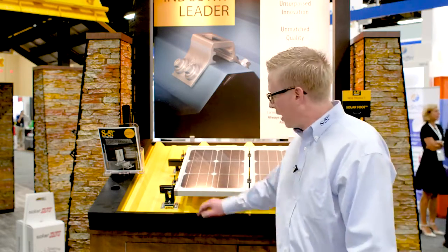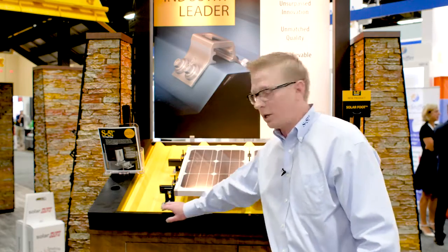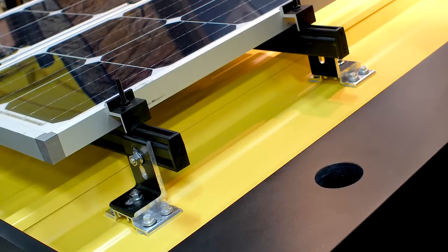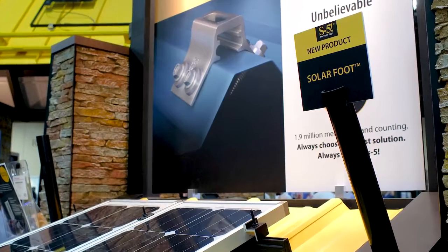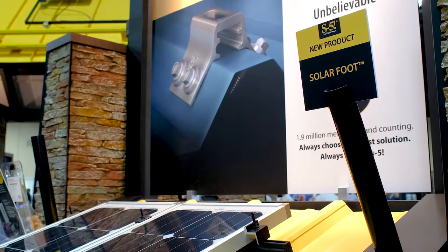Exposed fastener metal roofing has screws all through the surface of the metal roof holding the roof down. We then use our bracket along with quarter 14 tested screws to fasten the bracket through the roof to the structure below.